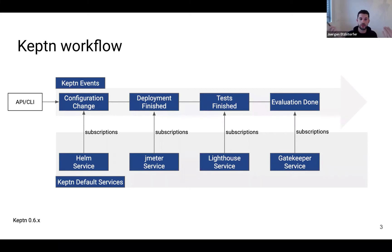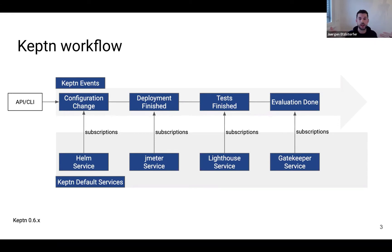We already have some default services that subscribe to these events and then execute their logic. When there is a new configuration change, the default service inside Keptn is the Helm service — Helm starts the deployment and informs Keptn that deployment is finished. For the deployment finished event, we have the JMeter service, which is the default service for tests. JMeter will be informed because it's subscribed to that event type, will start its work, and inform Keptn when the tests are finished.